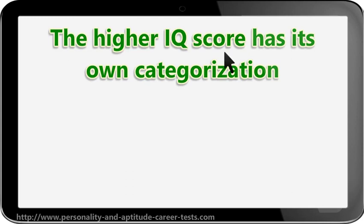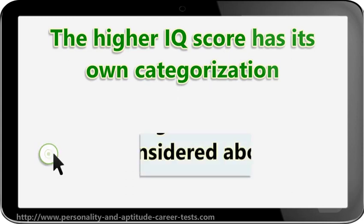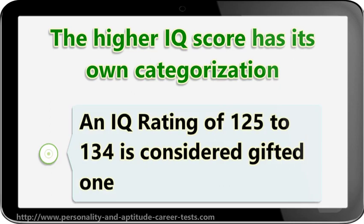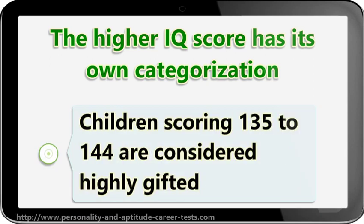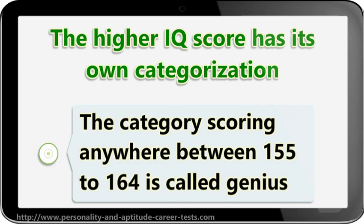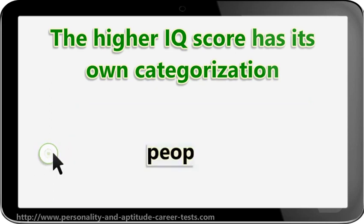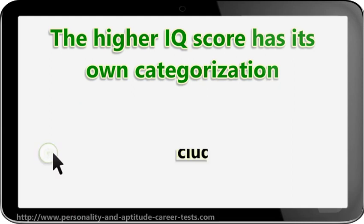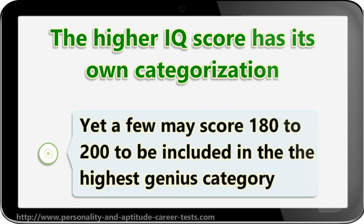The higher IQ score has its own categorization. IQ ratings of 115 to 124 are considered above average. An IQ rating of 125 to 134 is considered gifted. Children scoring 135 to 144 are considered highly gifted. An IQ score of 145 to 154 is deemed next to a genius. The category scoring anywhere between 155 to 164 is called genius. But there are high genius people who score 165 to 179. Yet a few may score 180 to 200 to be included in the highest genius category.